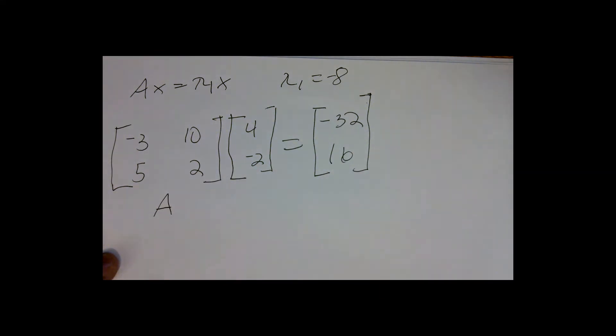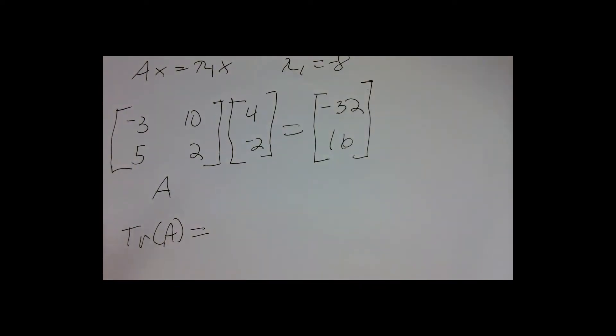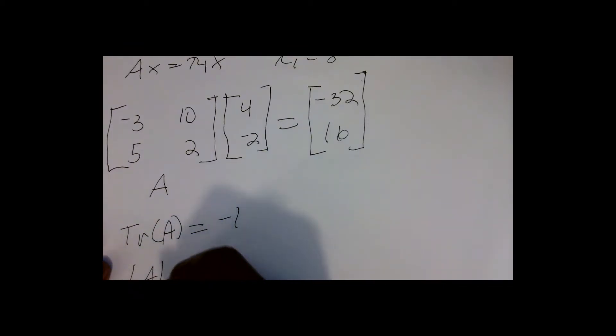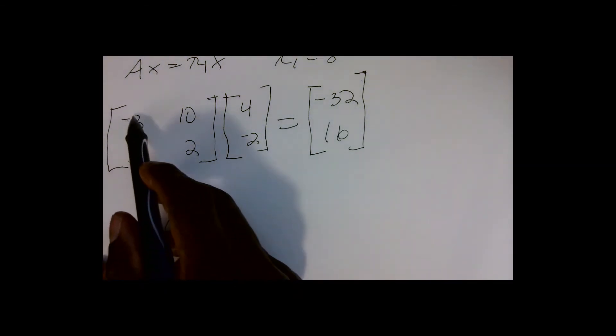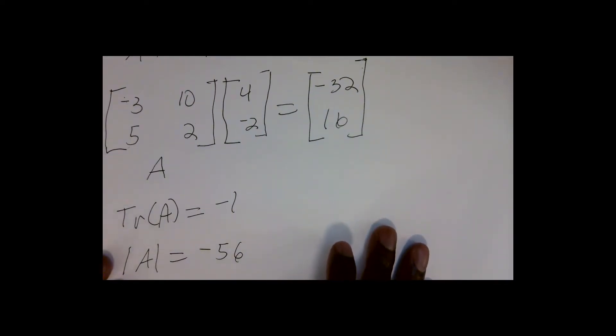Now I want to look at a different, more efficient way of finding the characteristic equation using two matrix calculations: the trace of the matrix and the determinant of the matrix. For matrix A, the trace is the sum of the main diagonal entries: (−3)+2 = −1. The determinant of A is the product of the main diagonal minus the product of the other two numbers: (−3)(2)−(10)(5) = −6−50 = −56.